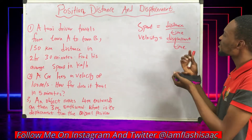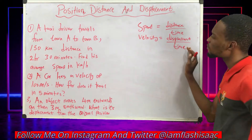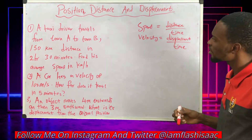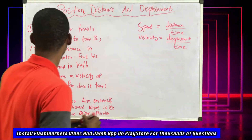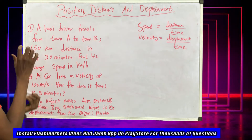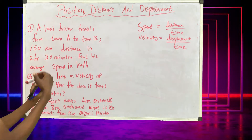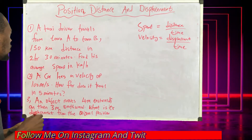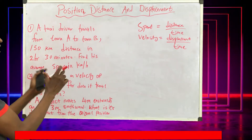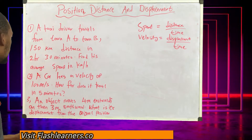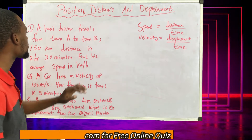While calculating speed you use distance, while calculating velocity we use displacement. Now let's look at question one: a taxi driver travels from town A to town B, a 150 kilometer distance in two hours 30 minutes. Find his average speed in kilometers per hour.